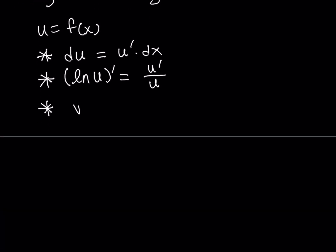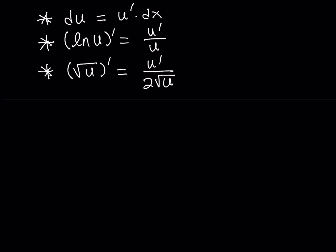The square root function can also be differentiated very easily. Again, the chain rule applies: you differentiate the inside and then divide by two times the original square root function. These are the bullet points I wanted to talk about before we get started.